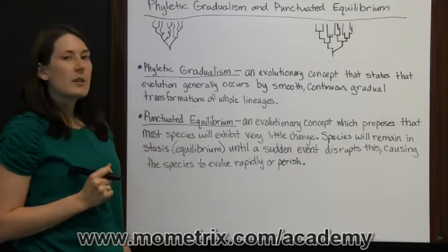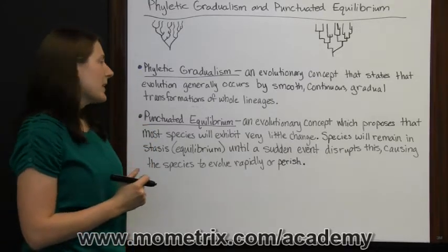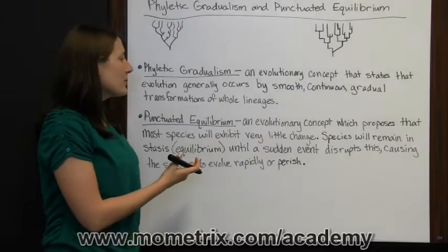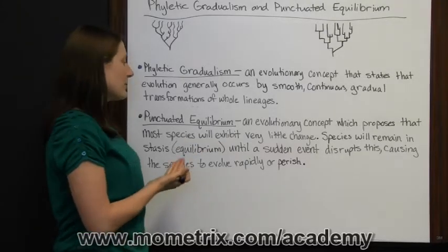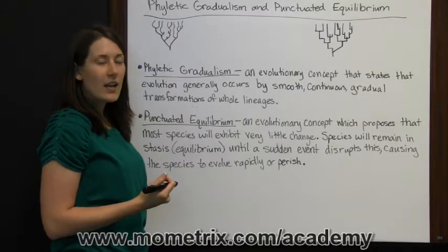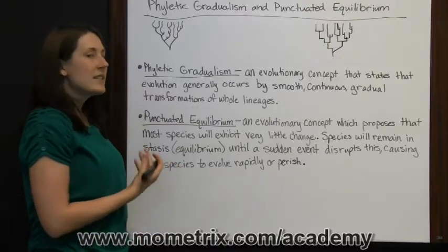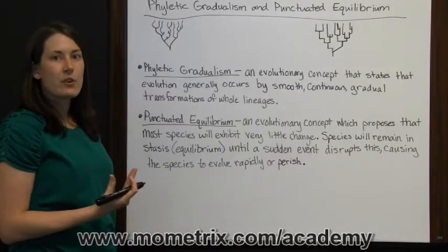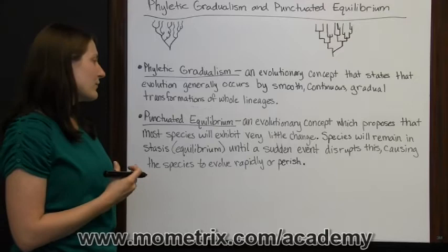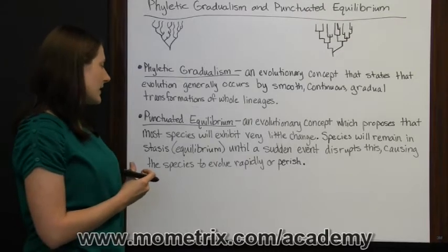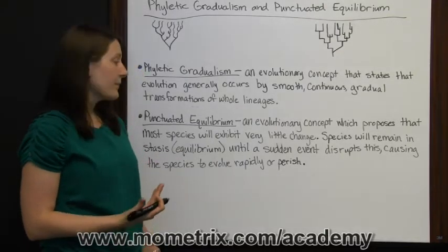Punctuated equilibrium is a different concept. This evolutionary concept proposes that most species will exhibit very little change. Species will remain in stasis, or equilibrium, until a sudden event disrupts this, causing the species to evolve rapidly or perish.